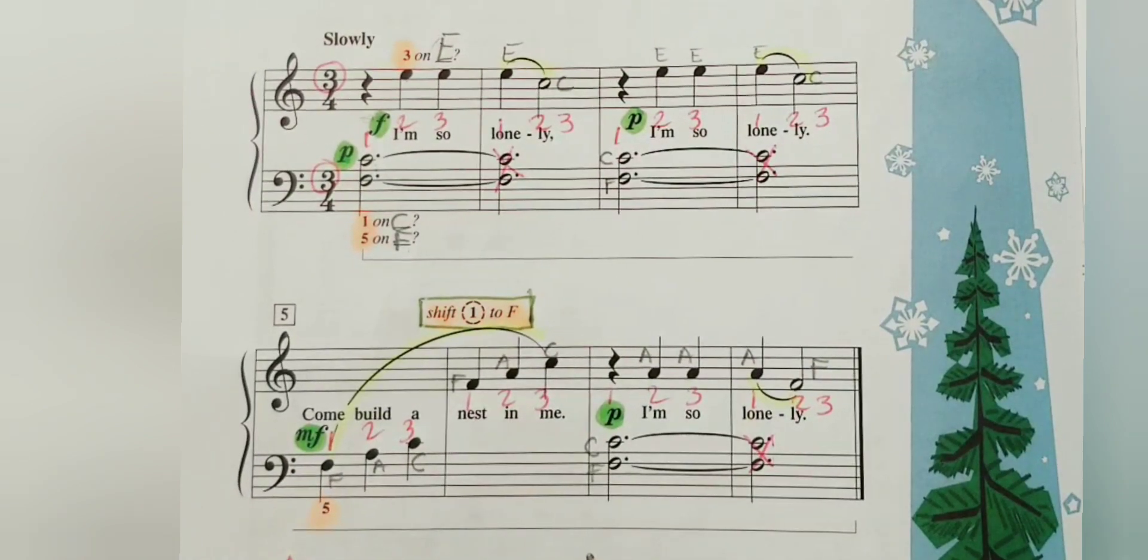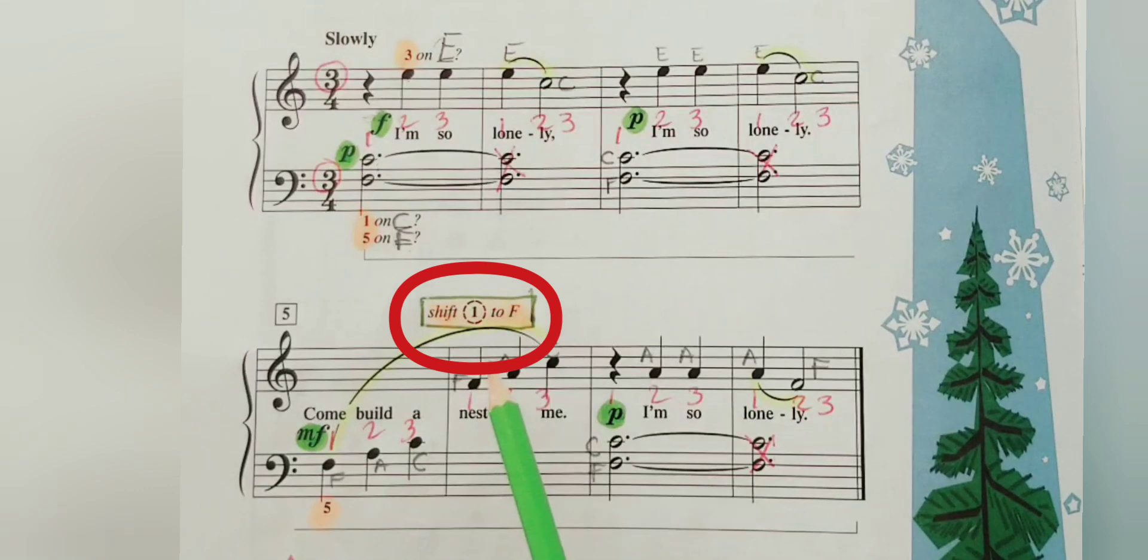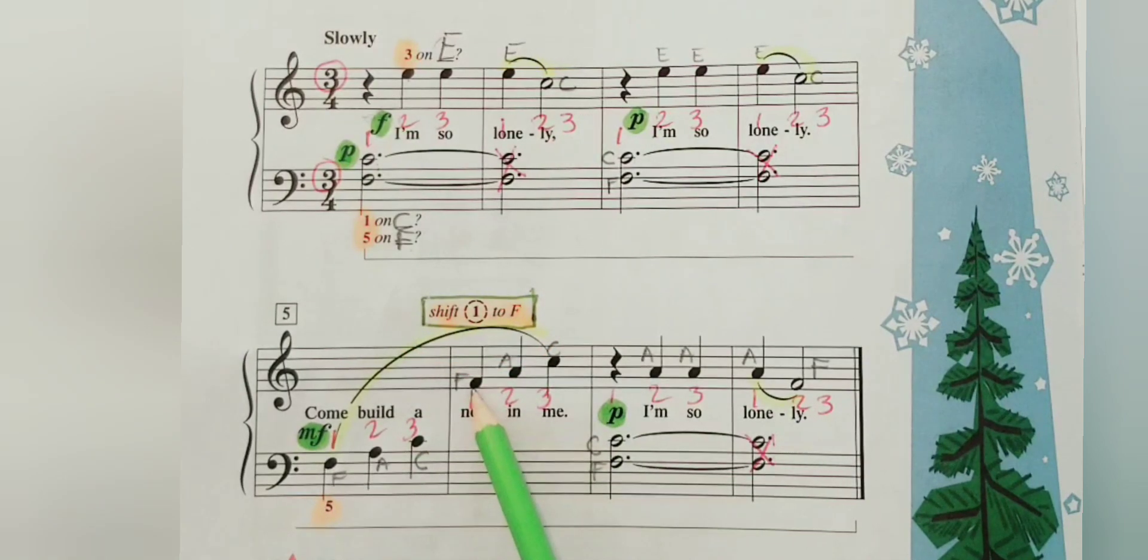The most important when highlighting our piece will be this finger one here that says shift to F. Shift finger one to F, so you can remember whenever it's time to move your hand down to treble clef F.